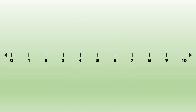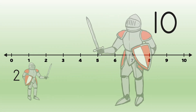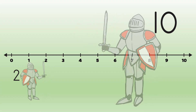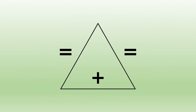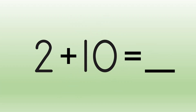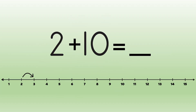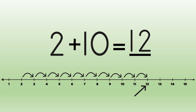Sometimes one of our addends is much larger than the other. We can use what we know about fact family triangles to help us with a shortcut. Let's say our number sentence is two plus ten equals blank. We can start at two and count up ten: one, two, three, four, five, six, seven, eight, nine, ten.